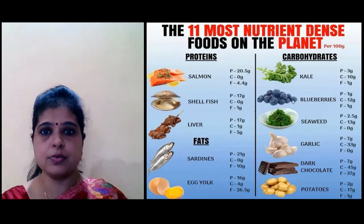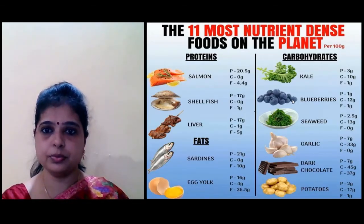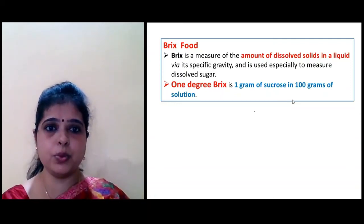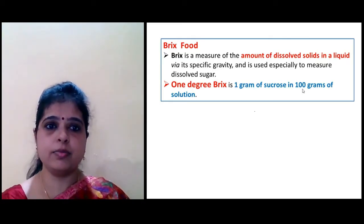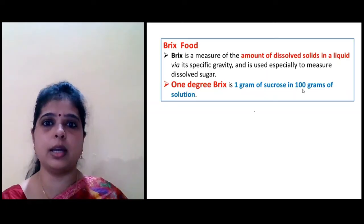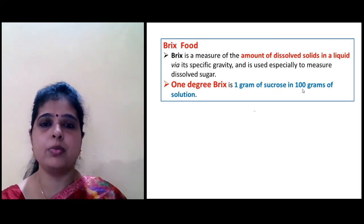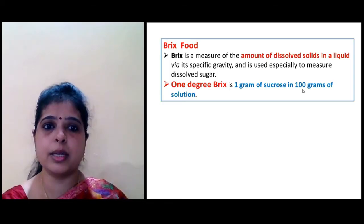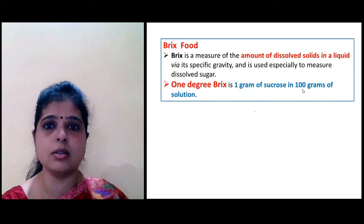These are the 11 most nutrient dense foods on the planet — just go through this figure and values. Next, what is Brix? Brix is a measure of the amount of dissolved solids in a liquid via its specific gravity. 1 degree Brix means 1 gram of sucrose is dissolved in 100 grams of solution. For example, in mango you will see 16, 17, or 18 degrees Brix, representing the amount of sugar present in 100 grams of solution.